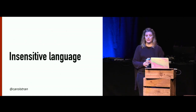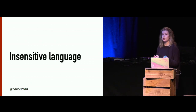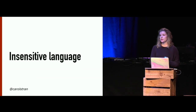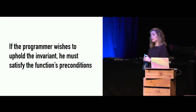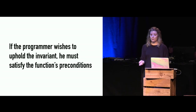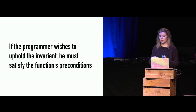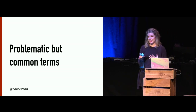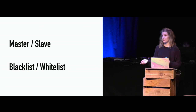One blocker to this goal is insensitive language. Across nationalities and personalities, insensitive phrasing or wording can mean a lot of different things. In this case it includes profanity or anything that might break a code of conduct. Take this example: 'if the programmer wishes to uphold the invariant, he must satisfy the function's precondition.' Gendered language is a relatively tame example, but it can have really negative effects on members of your community and their own sense of belonging. In software development, we also use problematic, outdated, and mostly racist terms that we're still using even though it's 2019 — terms like master-slave and blacklist-whitelist.